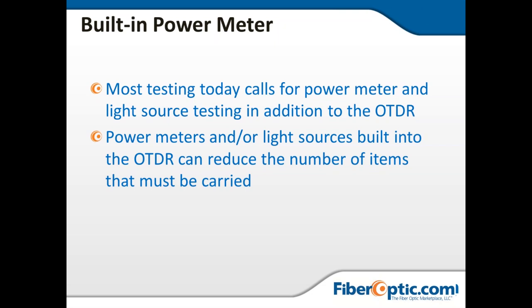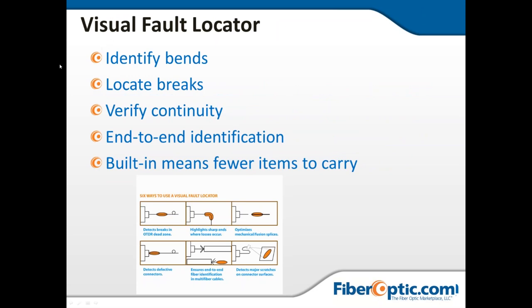Power meters and light sources can be built into the OTDR to reduce the number of items carried. The light source is typically the same source as the OTDR source. An OTDR source pulses at a certain frequency to get measurements back and forth; when it goes into laser light source mode to work with the power meter, it goes into a steady hold pattern — it just turns on and holds at a consistent power setting without flashing. So it just becomes a stable light source at that time, leveraging existing equipment to get an accurate measurement.